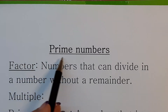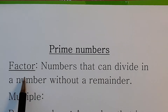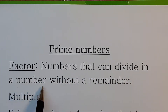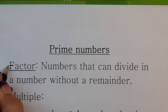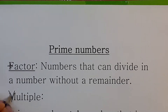Before I discuss prime numbers, let's just revise a factor. A factor is a number that can divide into a number without a remainder. Remember, the F in factor makes a division sign, and a multiple is when you multiply — that's when you count in the number.